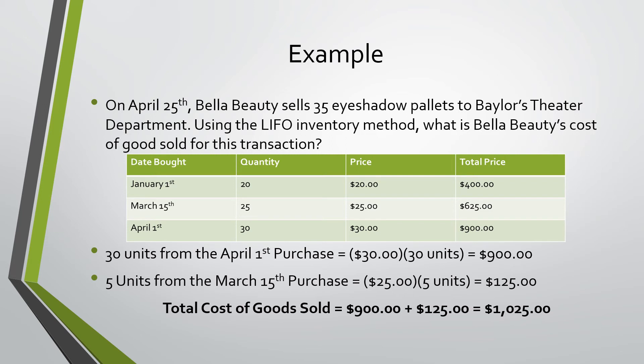Because we're using the LIFO method, we assume that the last things purchased were the first things sold. So the first thing we do is take all of the units from our April 1st purchase, which would be 30, and multiply that by the $30 purchase price. That gives us a total of $900. However, we still have five more eyeshadow palettes sold to Baylor. We will then take those from the March 15th purchase and multiply those by the purchase price of $25. This gives us a total cost of goods sold of $1,025.